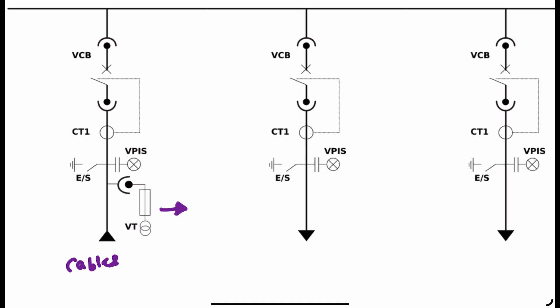So this is a voltage transformer with a switch and withdrawable-type capability. Moving on, we have a VPIS system — Voltage Presence Indication System. This tells us whether there is supply in the panel or not. If we want to carry out maintenance, we need to be 100% sure the supply is turned off, as human safety is paramount. This VPIS system helps us know that.